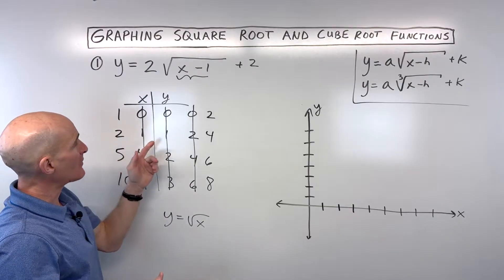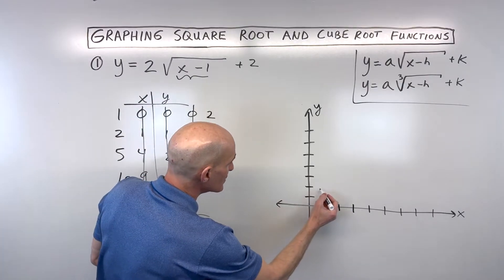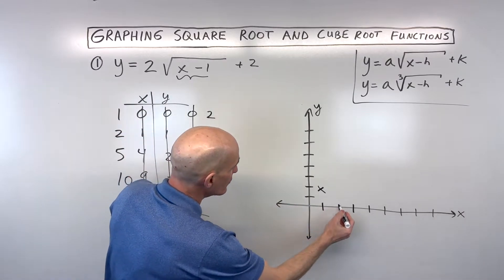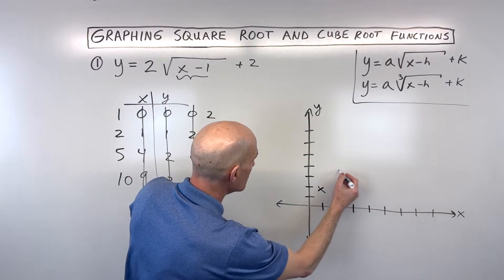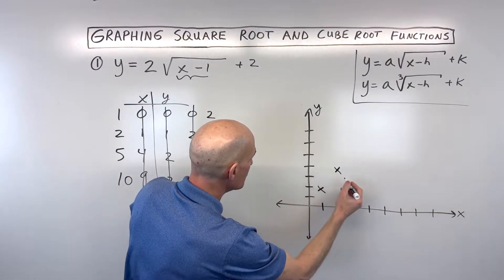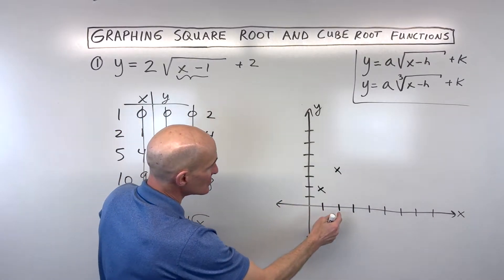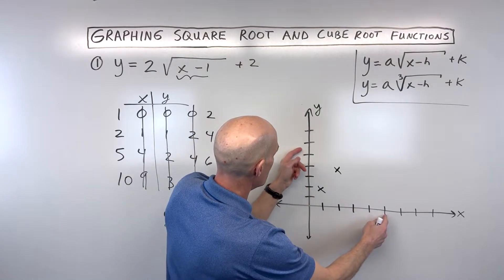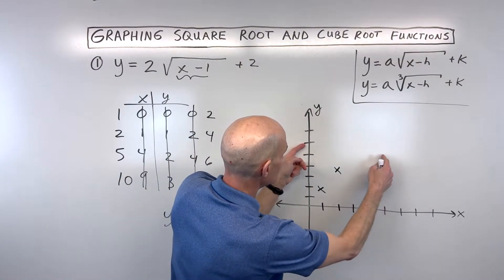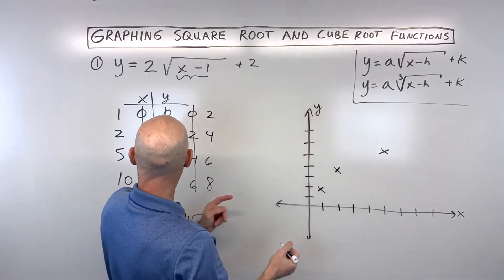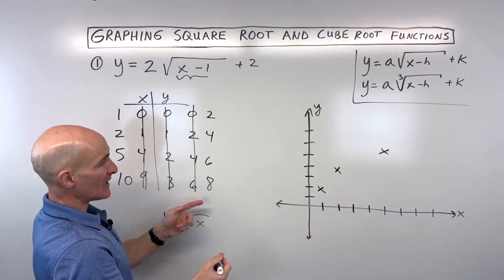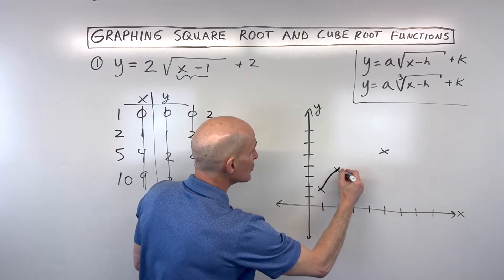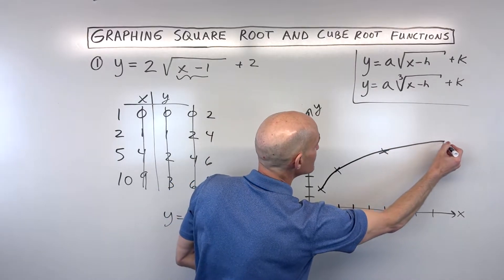Let's go ahead and plot these points. We've got (1, 2) right here, (2, 4) right about here, and (5, 6) right about here. The point (10, 8) goes off the graph, but the graph basically looks like this — it only goes in one direction. If you know the parent graph, it starts at the origin and goes to the right, so you only want to go in that one direction.